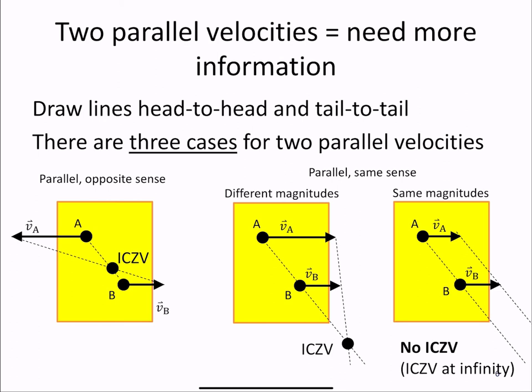If they have the opposite sense, then you'll always find an ICZV, and it will occur between the two points.